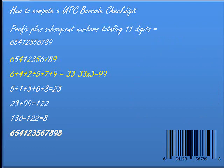Then you take all of the even-position digits: 5, 1, 3, 6, 8. Add those together and you get 23. You add that to the 99, and now you have 122.